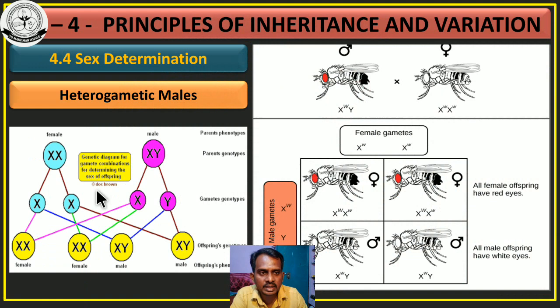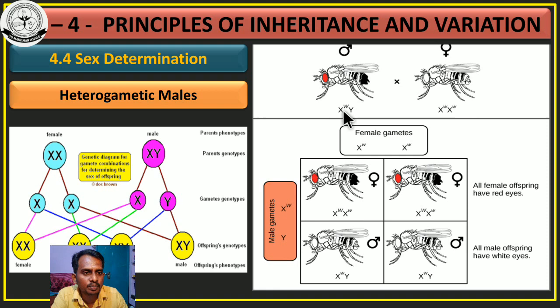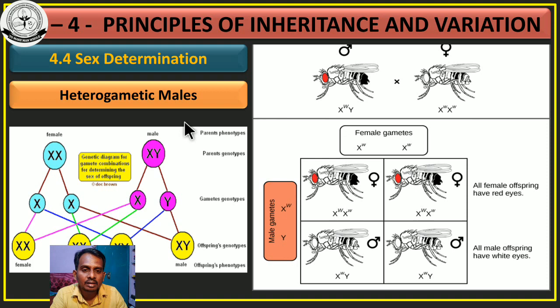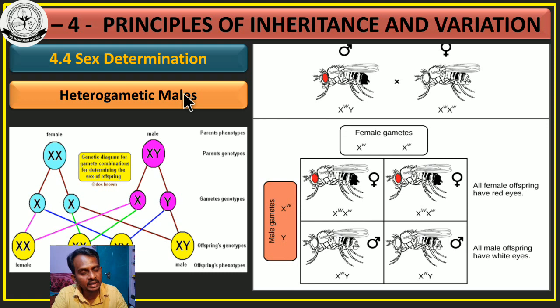The same diagram is also given here — the male individual produces XY gametes and the female individual produces eggs, each with the X chromosome. If you take a checkerboard, the offspring will look like this. This diagram is also not given in your textbook; kindly draw it. That's all — heterogametic male sex determination is over. In the next class we will discuss heterogametic female, where the male produces similar types of gametes and the female produces different types of gametes. Thank you, see you next class.